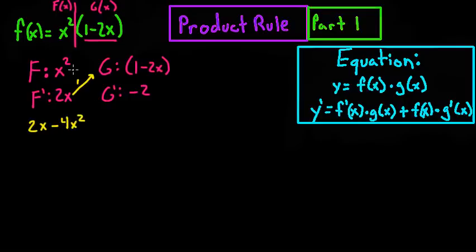The second part is to multiply f times g prime. So you've got f(x) times g'(x) - that's your second step. For the product rule, you're going to plus this. So that's going to leave you with plus negative 2x squared.